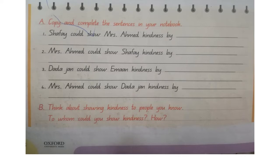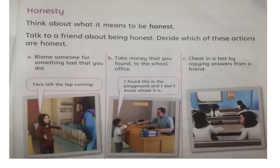Same for points two, three, and four — like how Mrs. Ahmed could show Shafi kindness by carrying things or reading a story. Think about this by yourself and write it in your own words. For point four, think about showing kindness to people you know. You do not need to write the answer, but you can discuss this with your parents or your siblings.